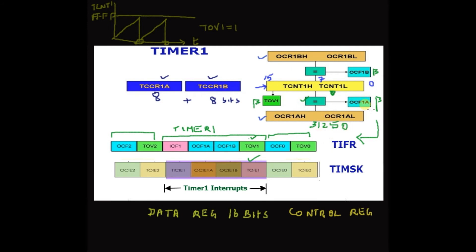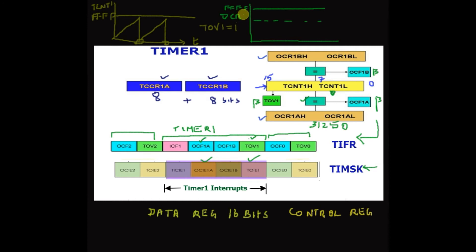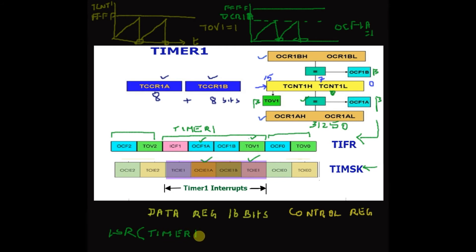In the second example we use the compare register OCR1A. There are two compare registers: OCR1A and OCR1B. We load a value of 31250 into OCR1A — that is for a delay of one second. When the timer counter starts counting from 0, instead of counting up to 65535, when it reaches the OCR1A value of 31250, it sets the flag OCF1A. The timer will not count up to 65535 — when it reaches OCR1A it sets OCF1A. So again, instead of checking the flag manually, we enable the interrupt OCIE1A, that is Output Compare Interrupt Enable, and the ISR function is called automatically.